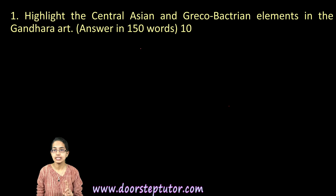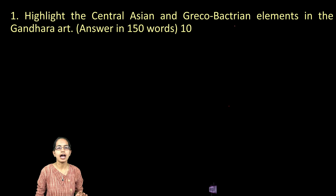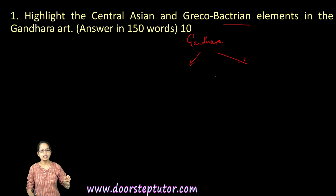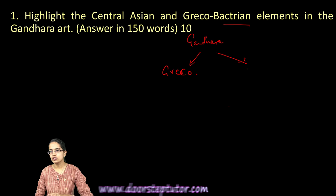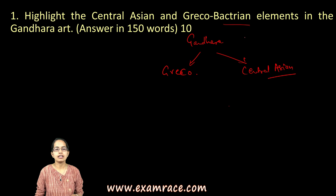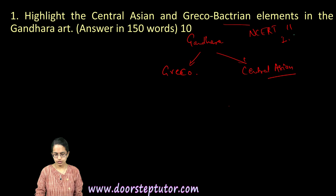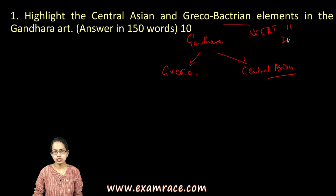The first question talks about highlighting Central Asian and Greco-Bactrian elements in Gandhara style. First, you have to explain what Gandhara style is, then classify it under two features: those derived from Greco-Bactrian and those derived from the Central Asian side. Gandhara style was covered in the NCERT Class 11 Indian Culture book, which discusses this topic in detail.